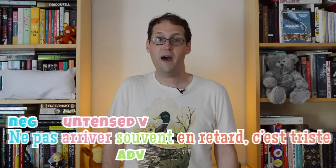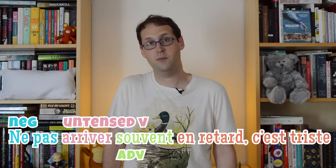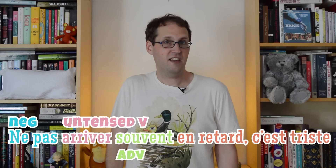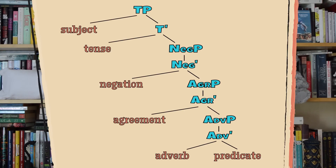So it looks like there must be a position in the clause above negation where verbs go to get tense. But it also looks like there's another spot just below negation and just above the adverb – a kind of inflectional limbo where tenseless verbs wind up when they can't climb any higher. So you have sentences like 'ne pas arriver souvent au retard, c'est triste,' where the verb 'arriver' gets stuck in between. Our clause structure must look something like this: information about tense is at the top, while another separate position for tenseless verbs hangs lower down, possibly related to verbal agreement. So we've had to explode the inflectional phrase into different parts. Clauses are actually tense phrases, or TPs. And this makes intuitive sense, because sentences can't stand on their own without tense.